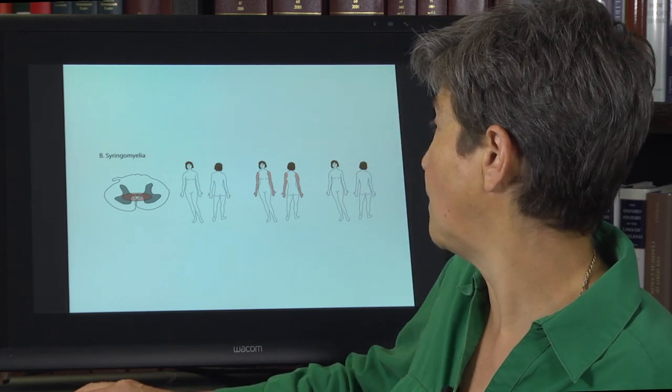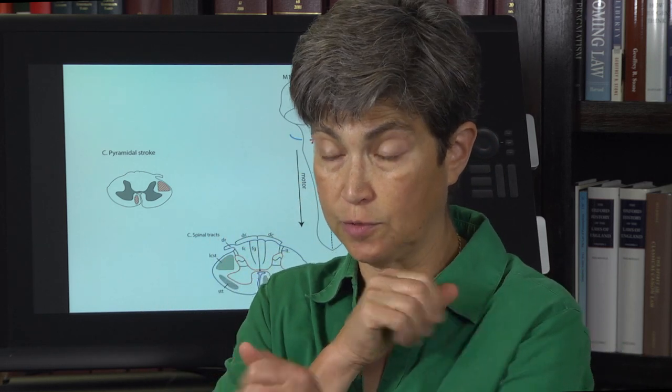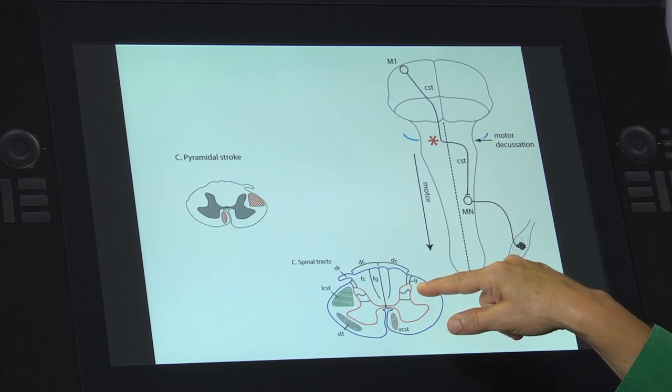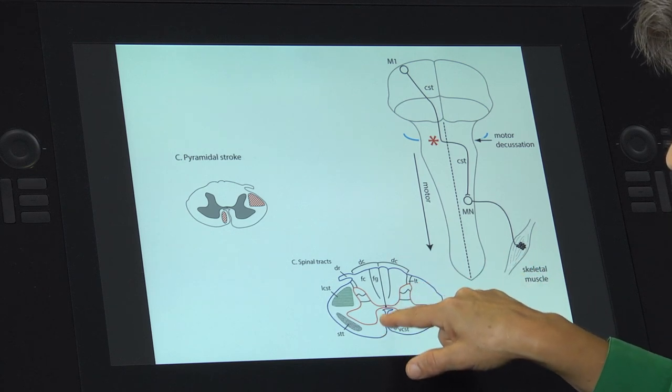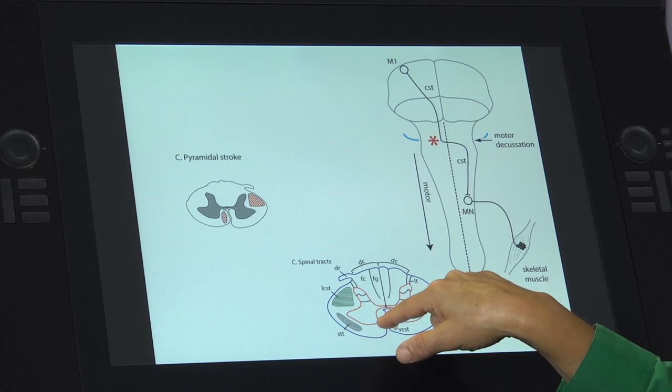Finally, we're going to think about what would happen in the case of a pyramidal stroke. Remember that the pyramids contain the entire corticospinal tract before it has split into the lateral corticospinal tract and the ventral corticospinal tract. The pyramid crosses the midline where the medulla meets the spinal cord. 90% of it crosses and becomes the lateral corticospinal tract in the dorsolateral funiculus.